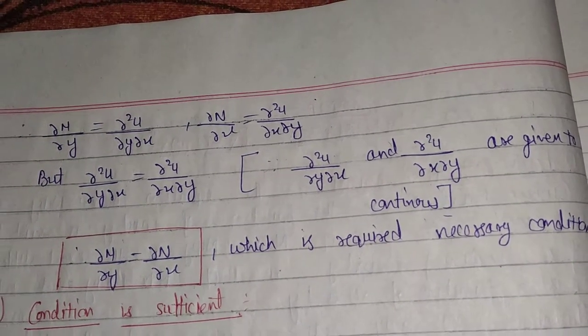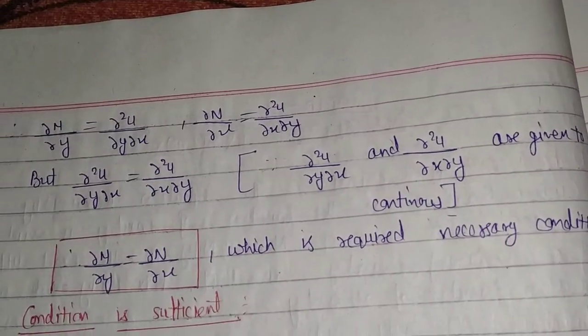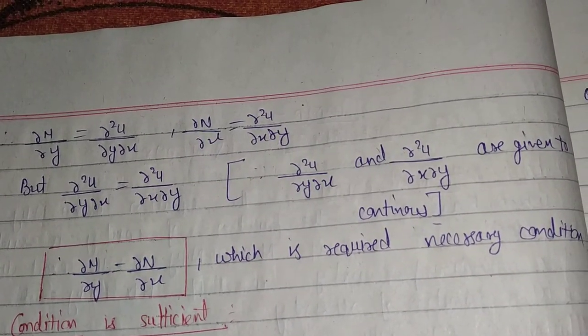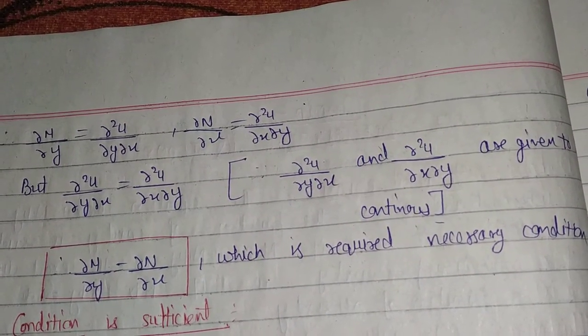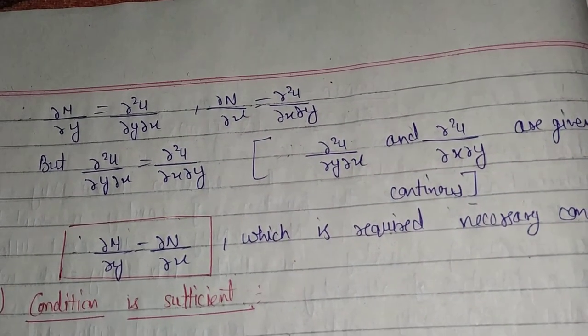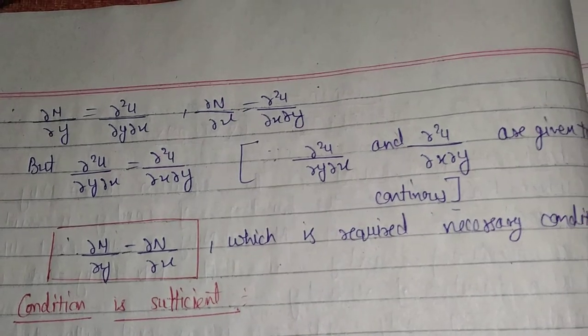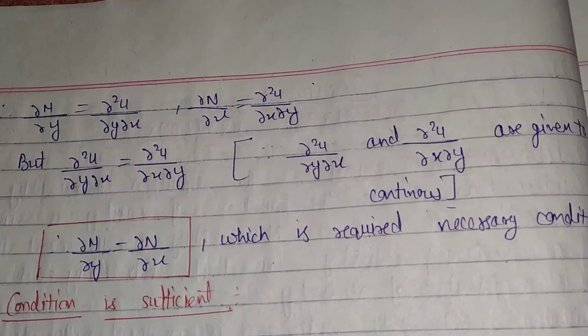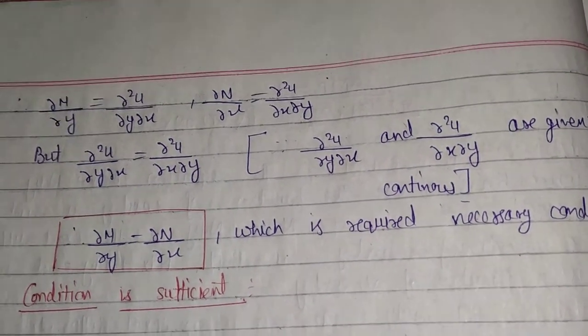If the condition ∂M/∂y ≠ ∂N/∂x, then your equation is not exact and your work will be finished — the question ends there. If the condition is satisfied, then we move to the second step where we find the solution.